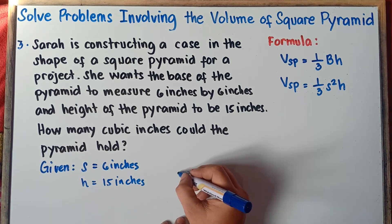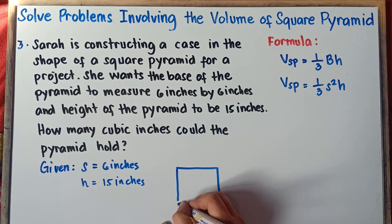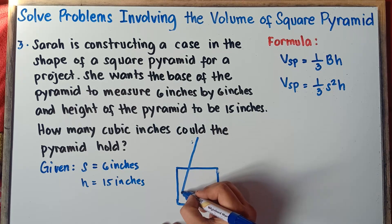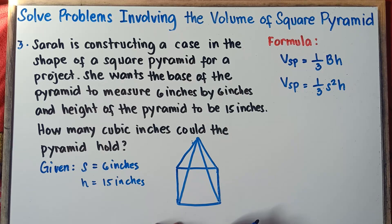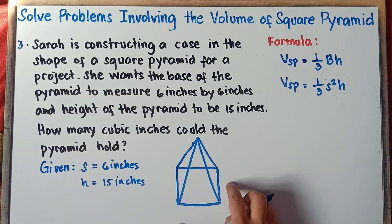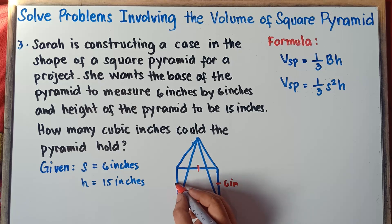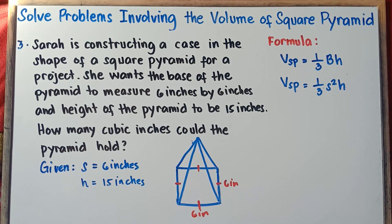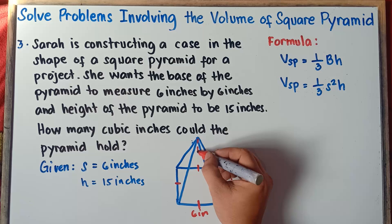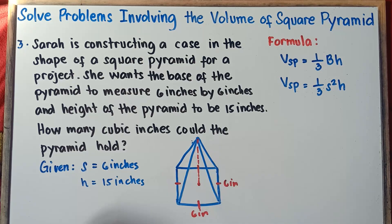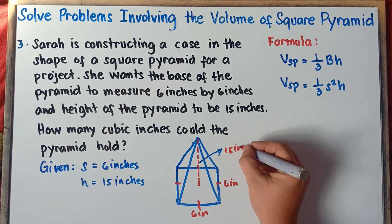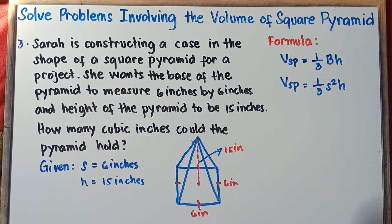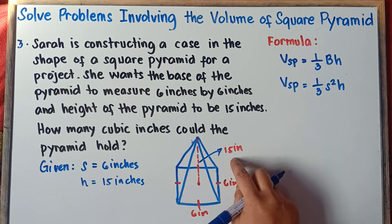We can draw the illustration for better understanding. Draw a square and then draw the pyramid. The base measures 6 inches by 6 inches — so all four sides are 6 inches each. The height is 15 inches. Since we have given base side and height, we will use the second formula.